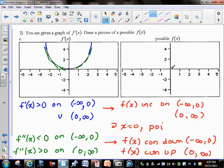So if you can draw something that is always increasing, gets to the x value of zero and then changes concavity from downward to upward, you've got it made.